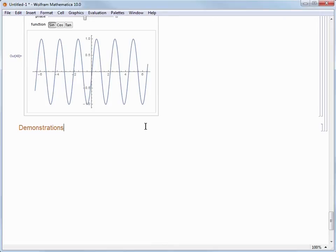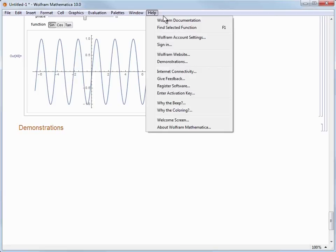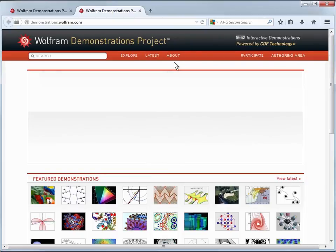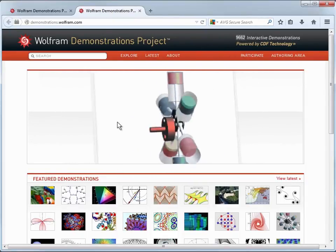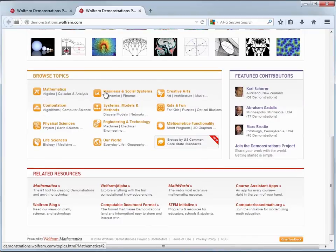Let's go to the demonstrations project site actually now, which you can find by choosing help in demonstrations. Once I'm there, I can see the running tally of available demonstrations. I can also browse by topics like mathematics, business and social systems, engineering and technology, and all of these others. You can also search by keywords as well.